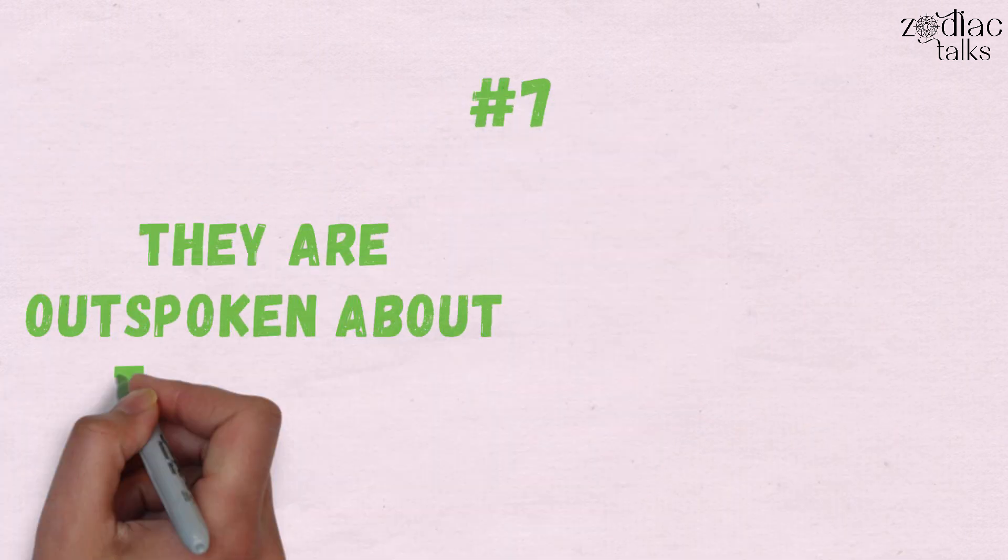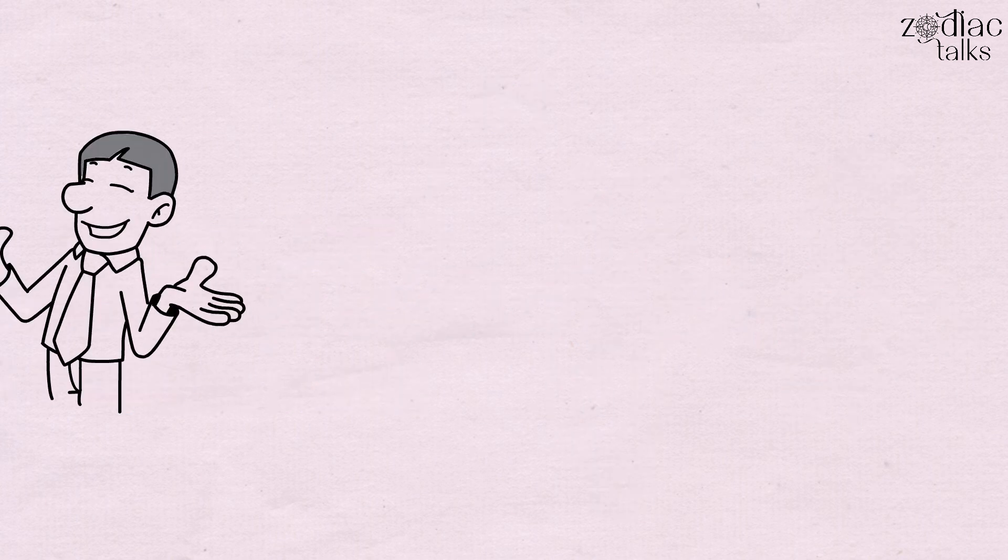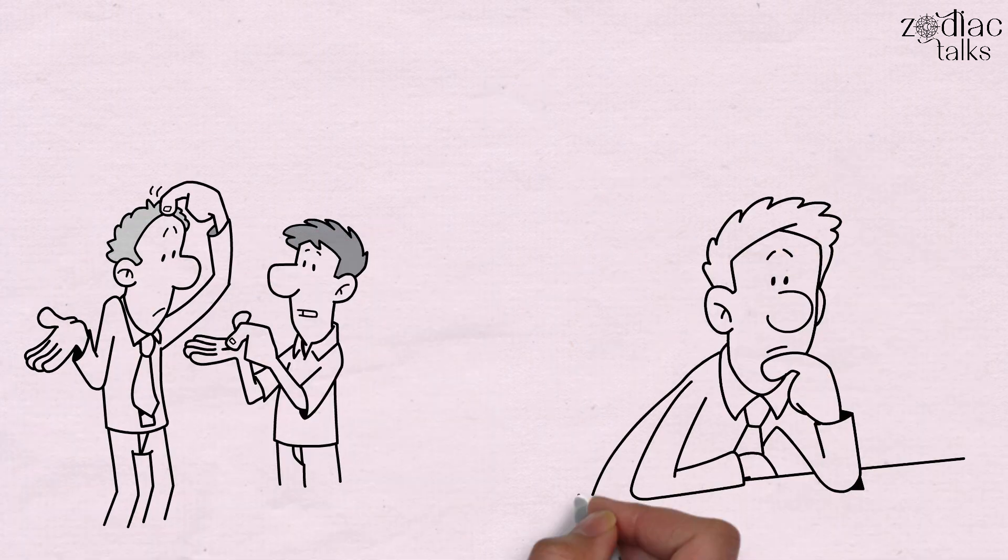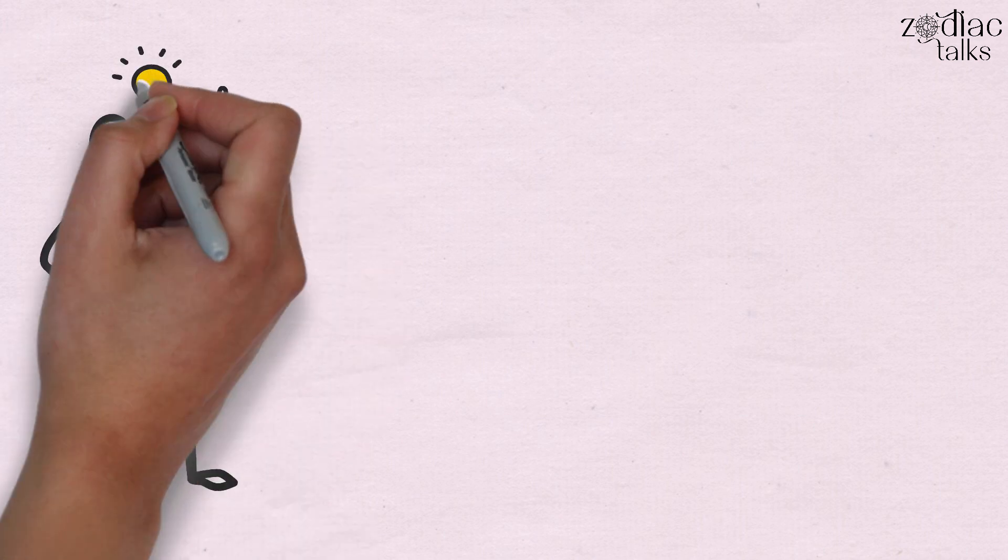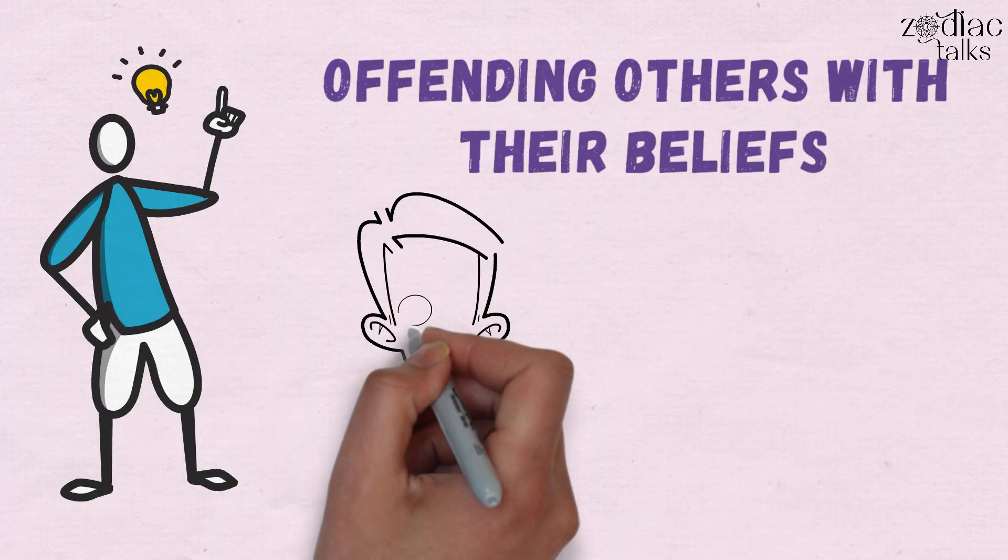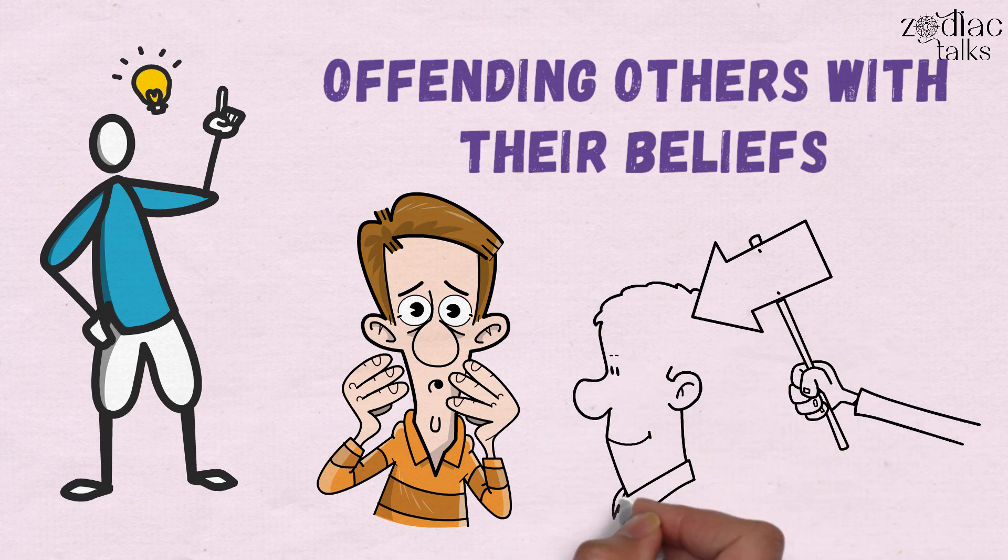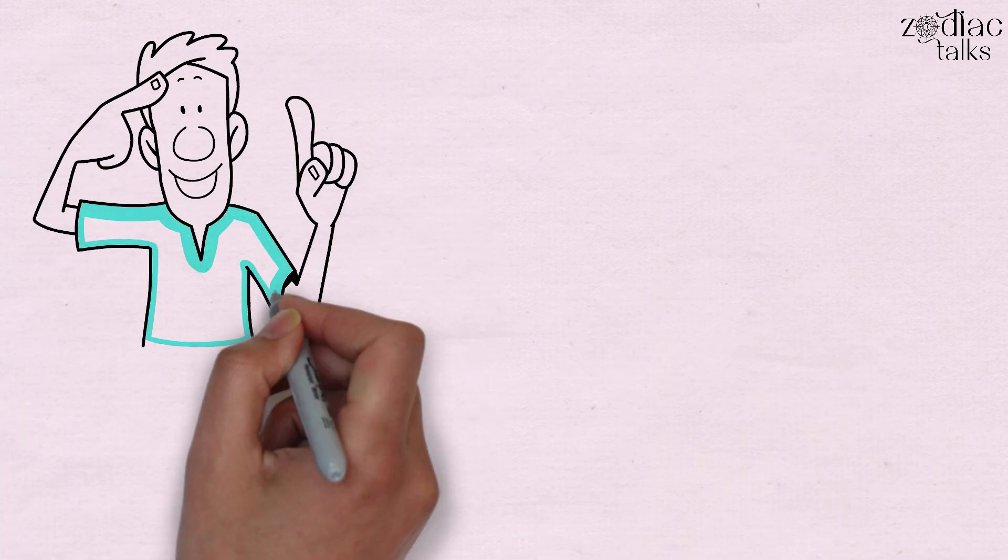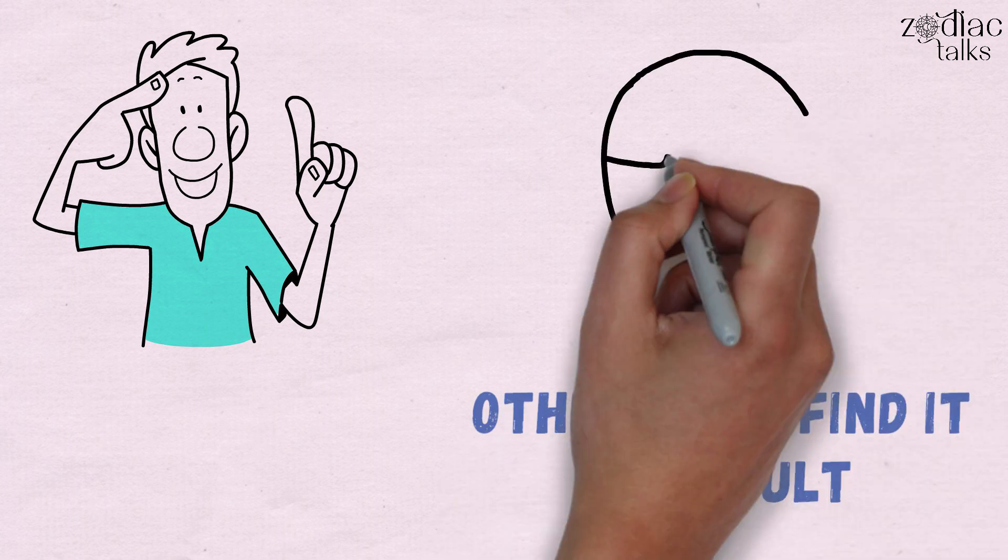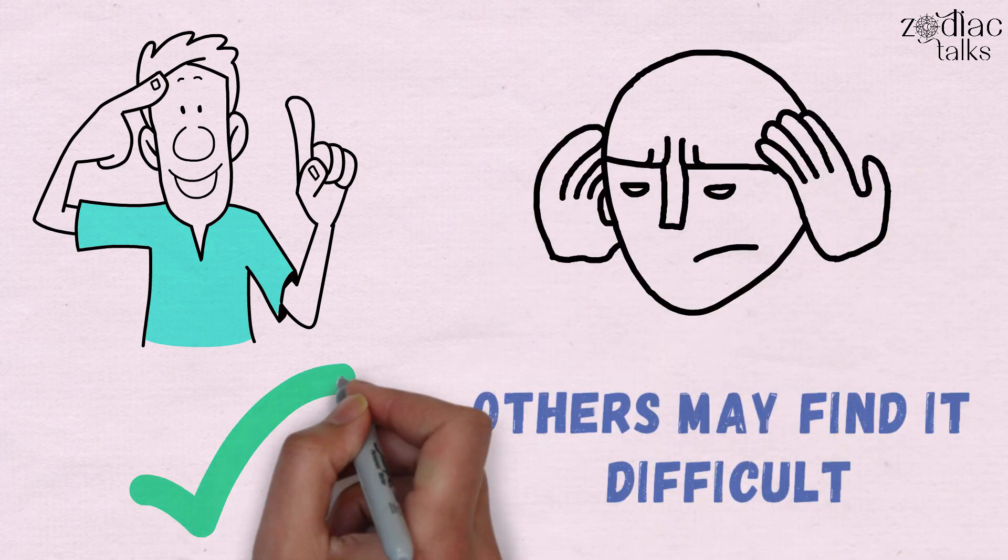7. They're Outspoken About Their Views. Usually, they say exactly what everyone else is thinking, but are afraid to express. They may not be as concerned about offending others with their beliefs, and they enjoy the shock value that comes with expressing their outlandish thoughts. They're also very firm in their beliefs, and others may find it difficult to persuade them to change their minds after they've made up their opinions.